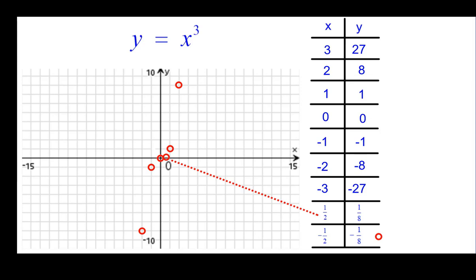So plotting that, a half comma 1 eighth and negative 1 half comma negative 1 eighth really flattens the curve around there.